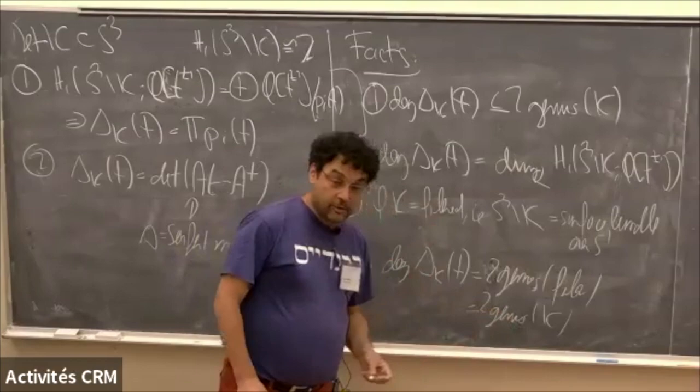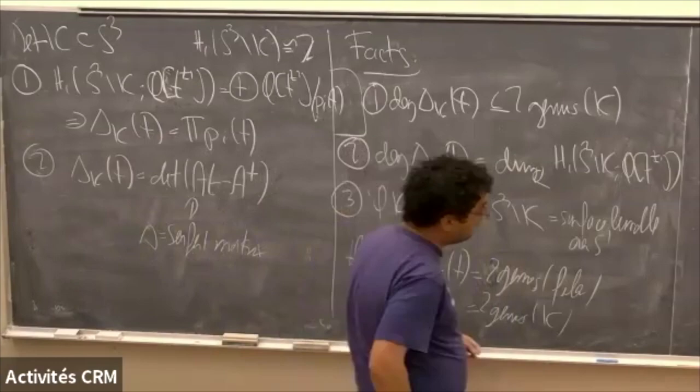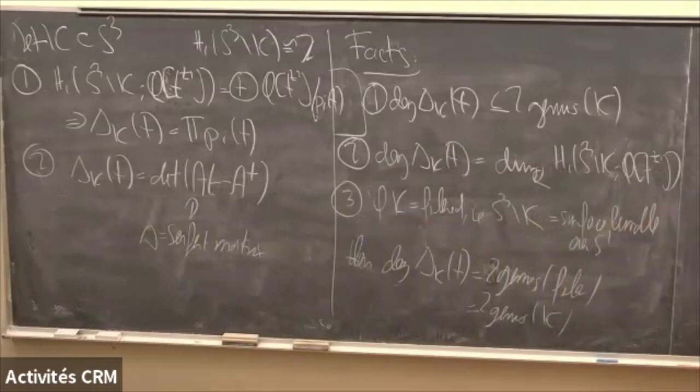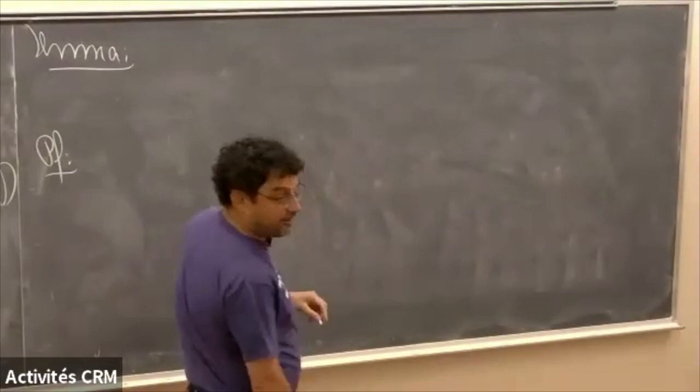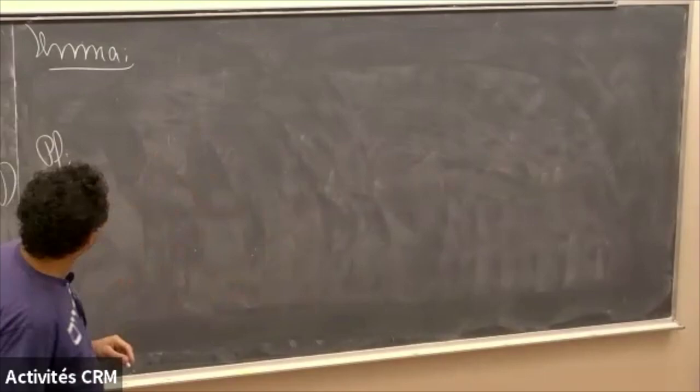So for a fibered knot, the Alexander polynomial knows the genus. Now I asked ChatGPT again: can you prove Simon's conjecture using the Alexander polynomial? It gave a not-so-bad argument. Let me prove the following lemma, and then I'll tell you where ChatGPT screwed up — but it did prove something.